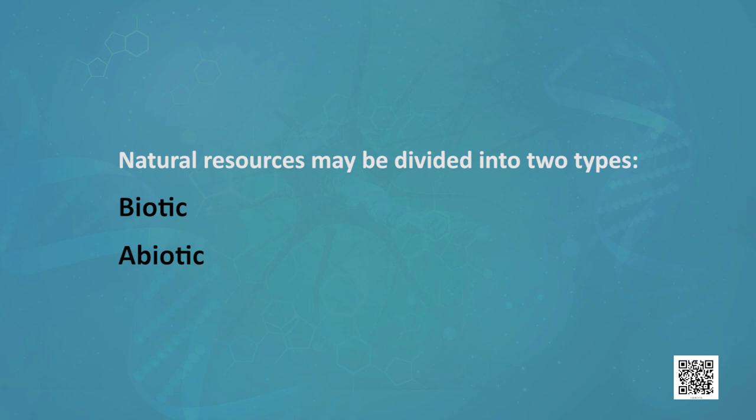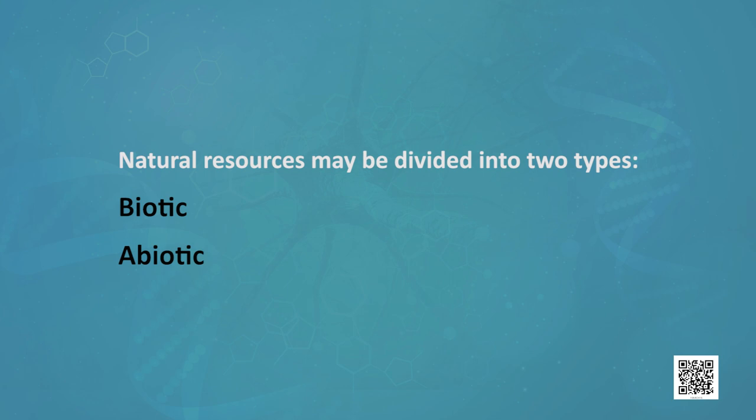There is much debate worldwide over natural resource allocations, particularly during periods of increasing scarcity and shortages, which leads to depletion and overconsumption of resources. Natural resources may be divided into two types: biotic and abiotic. Biotic resources are obtained from the biosphere — living and organic material such as forests and animals. Fossil fuels such as coal and petroleum are also included in this category because they are formed from decayed organic matter.